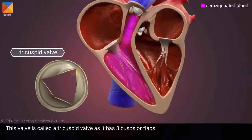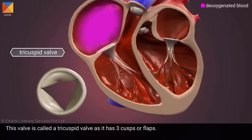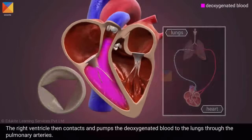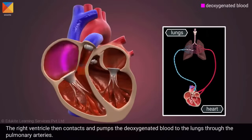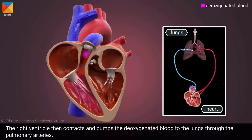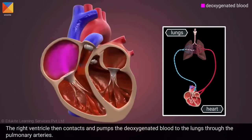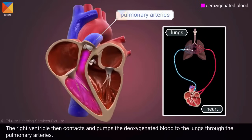This valve is called a tricuspid valve as it has three cusps or flaps. The right ventricle then contracts and pumps the deoxygenated blood to the lungs through the pulmonary arteries.